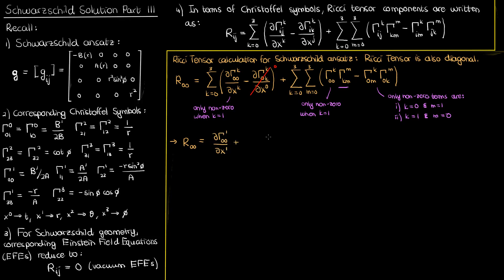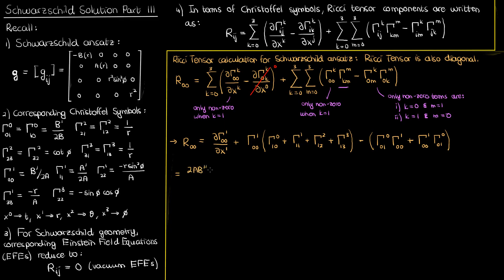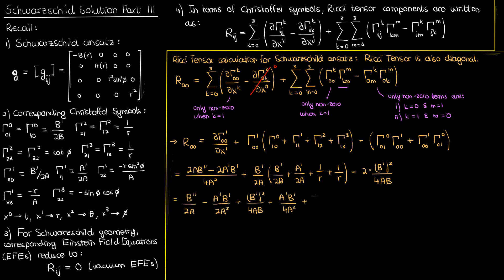The first term reduces to this, the second term is always zero, the third term reduces to this summation over m, and the fourth term reduces to the sum of two terms. We then plug in the Christoffel symbols and simplify. This derivative term is really the derivative with respect to r of b-prime over 2a; applying the quotient rule gives b-double-prime times 2a minus the derivative of the denominator times the numerator, divided by 4a squared. Combining terms with a common denominator gives our simplified expression for the R₀₀ component of the Ricci tensor.